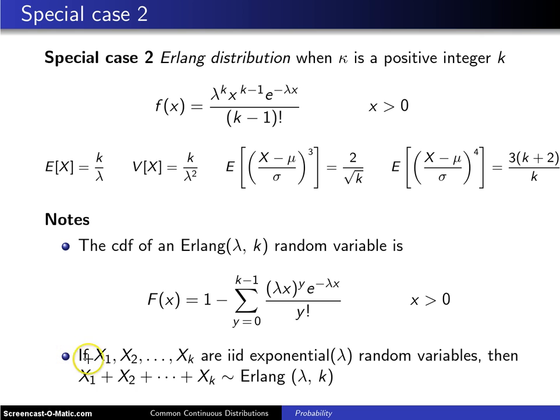Another result is if X1 up to Xk are iid, and that stands for independent and identically distributed exponential(lambda) random variables, then the sum of k of those random variables has the Erlang distribution with parameters lambda and k. So the first special case was the exponential, the second special case is the Erlang.